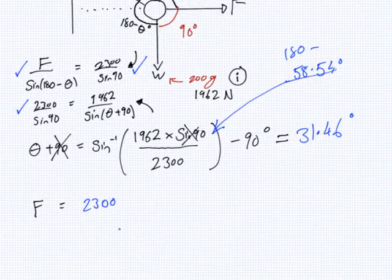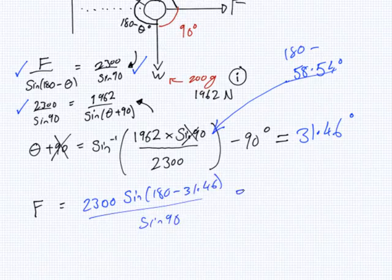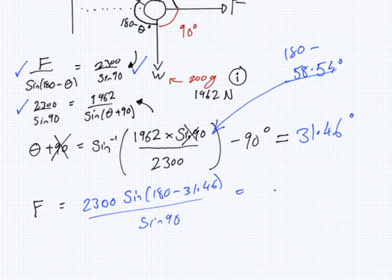Of course you can. 31.46 degrees. Okay, so this now, the F would be 2300 sine 31.46, no sorry, sine 180 minus 31.46 over sine 90. 1200 newtons. That is for part two. And that is for part three.